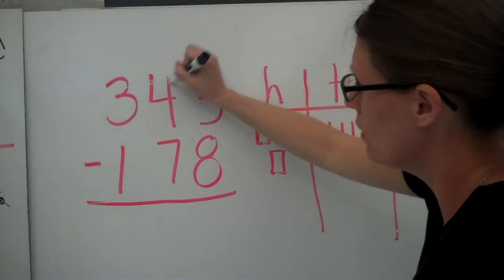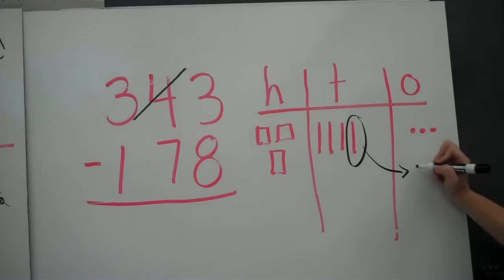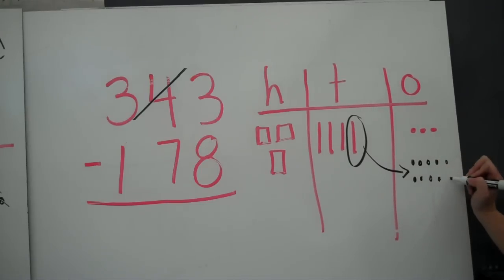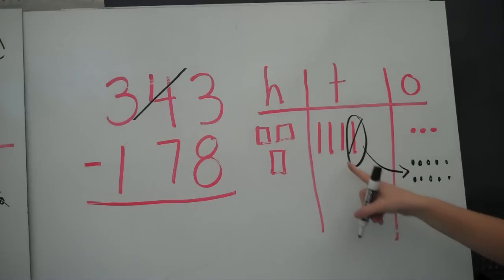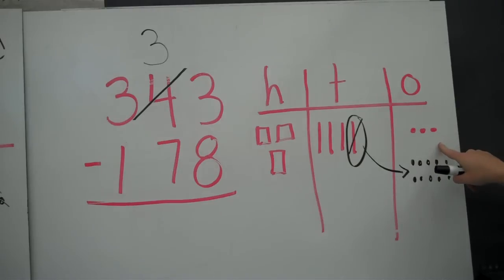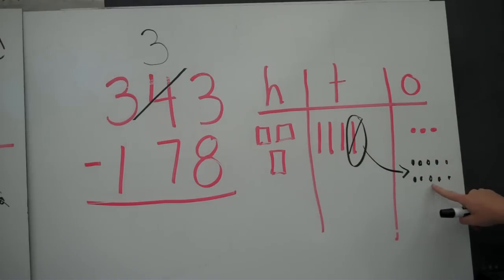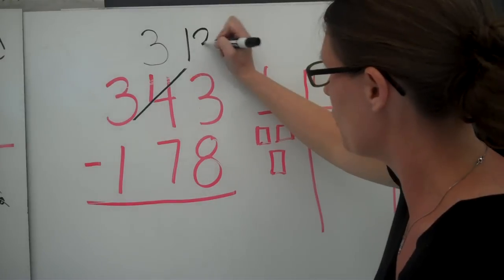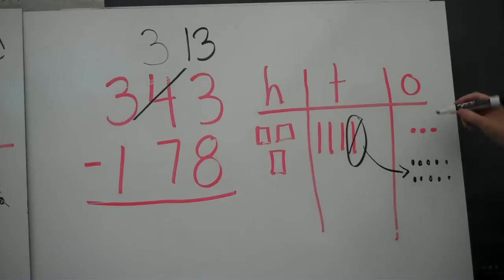So I'm going to go over here and take one of those tens and put it into the ones. I no longer have 4 tens, I have 3 tens. I no longer have 3 ones — I have 3 plus 10, which is 13. Now I have 13 ones minus 8. Now I can subtract.